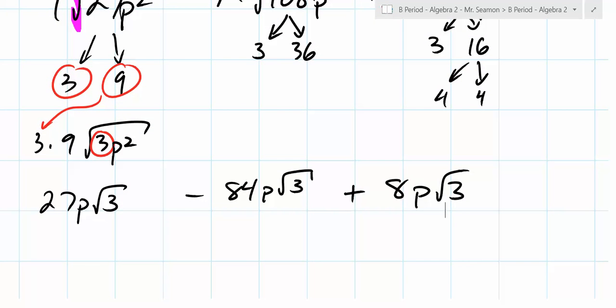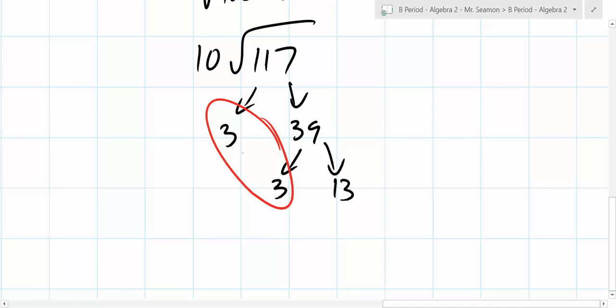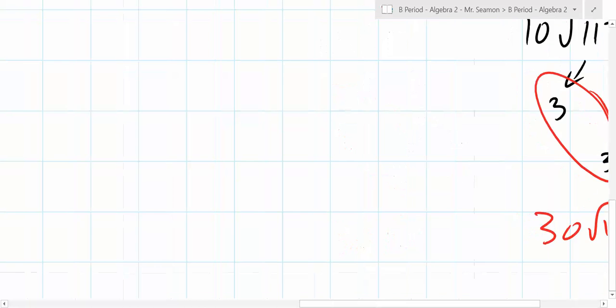And now can we combine all these things? Yeah. Now you have 27 minus 84 plus 8 and we're home free. So make those trees. Make those trees.